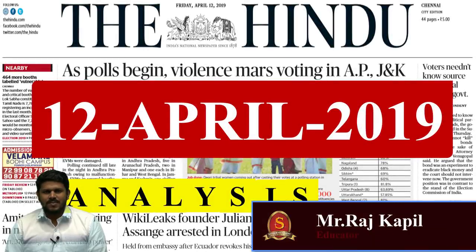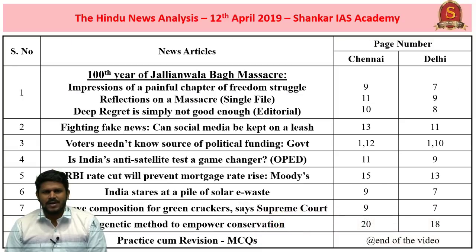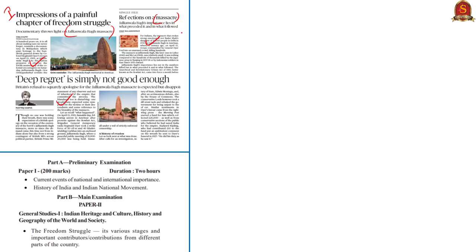Welcome to the Hindu News Analysis by Shankar IAS Academy for 12th April 2019. Displayed are the list of news articles selected for today's analysis and their page numbers in both Chennai and Delhi editions of the newspaper. The first discussion of the day is based on three articles focusing on the Jallianwala Bagh Massacre, which appeared on page numbers 9, 10, 11 of the Chennai edition and page 7, 8, 9 of the Delhi edition.